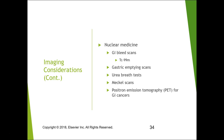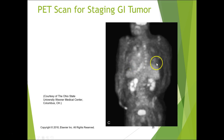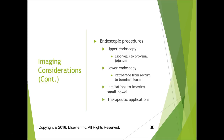Nuclear medicine is great for GI bleeds and gastric emptying studies — checking if food is retained in the stomach longer than it should be. We do urea breath tests to check for ulcers, Meckel's scans, and for GI cancers we use PET. On a PET scan, the kidneys and bladder are processing out the radioisotopes — that's normal uptake, not a positive finding for disease.